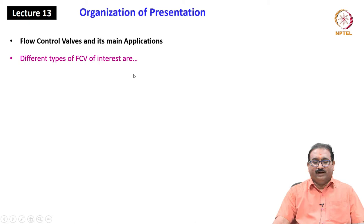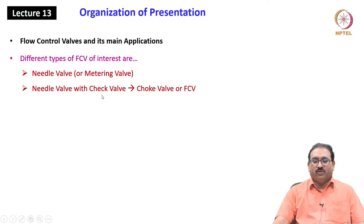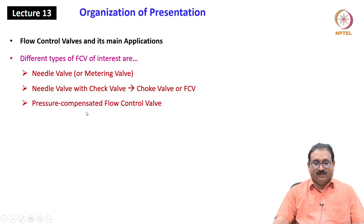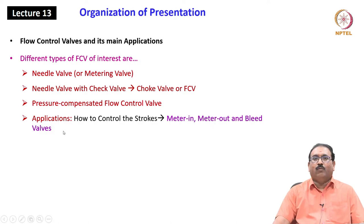We will discuss different types of FCVs of current interest: needle valve or metering valve, needle valve with check valve — also known as a choke valve or flow control valve — pressure compensated flow control valve, and application of these valves to control the strokes of the actuator. We will discuss the meter-in circuit, meter-out circuit, and bleed valve circuits.